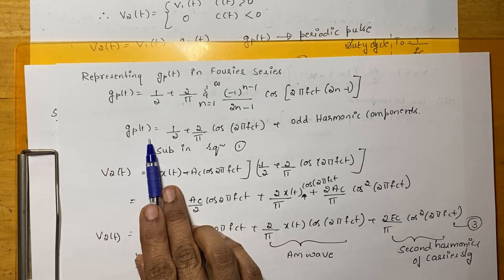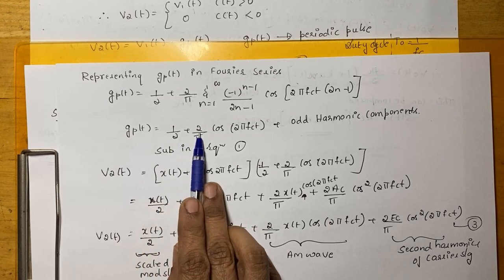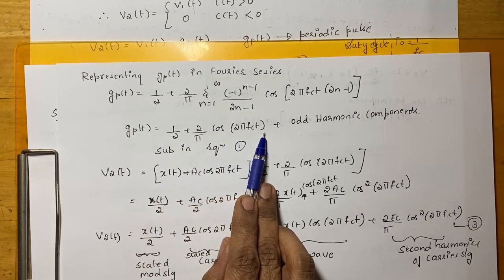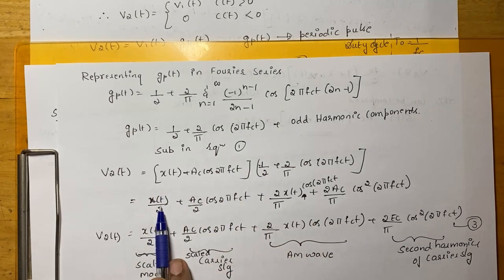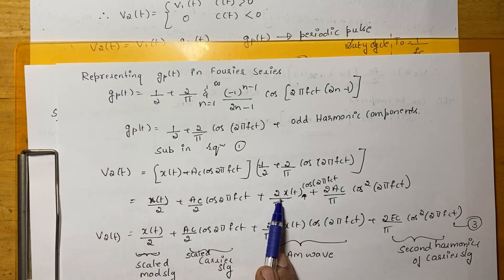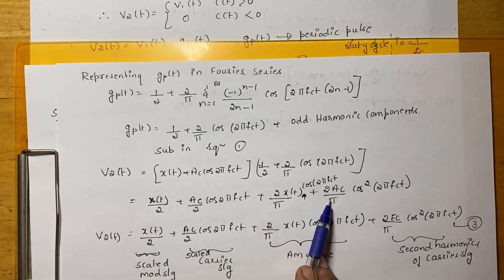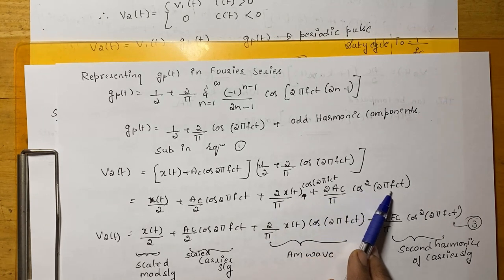that is V2(t) = V1(t) into GP(t). What is GP(t)? GP(t) = 1/2 + 2/π cos(2π FcT). Now, solving this, X(t)/2 + AC cos(2π FcT) + 2/π X(t) cos(2π FcT) + 2/π AC cos(T) cos(2π FcT).